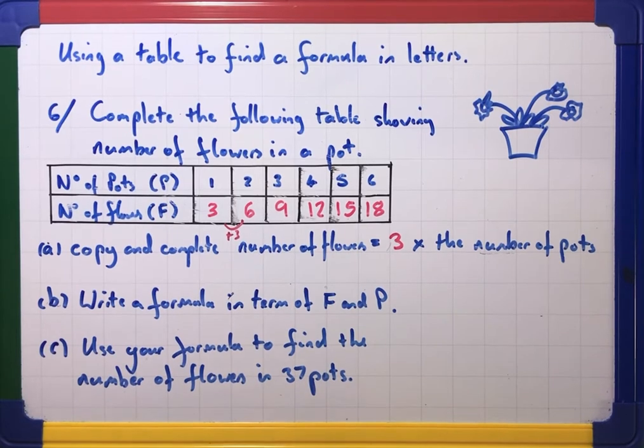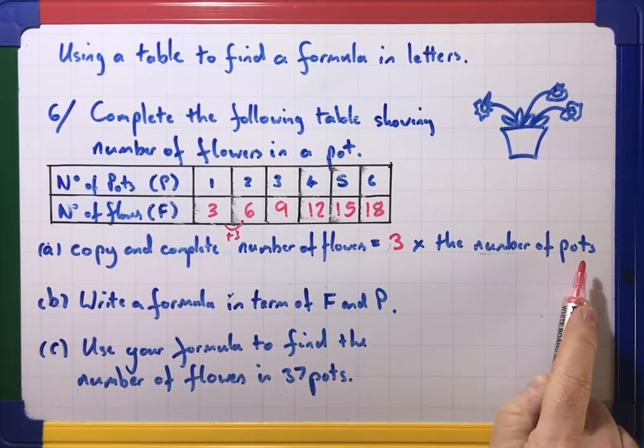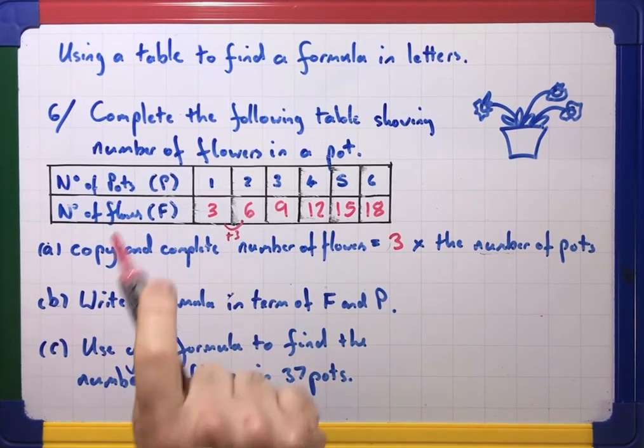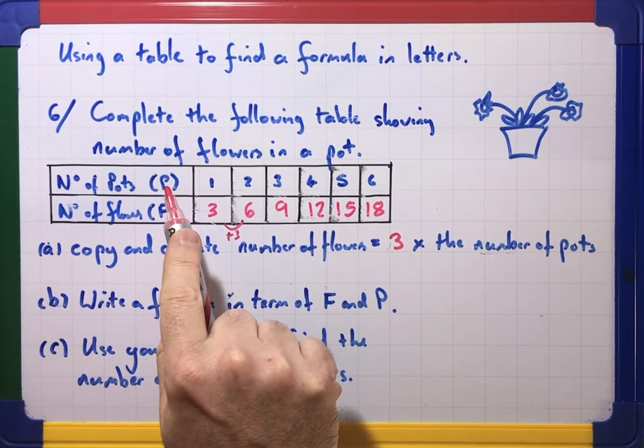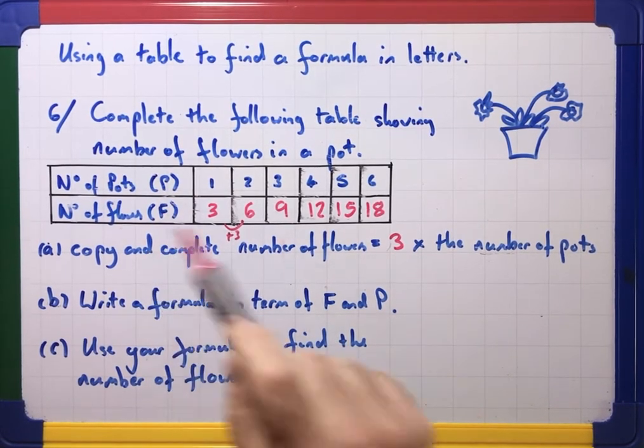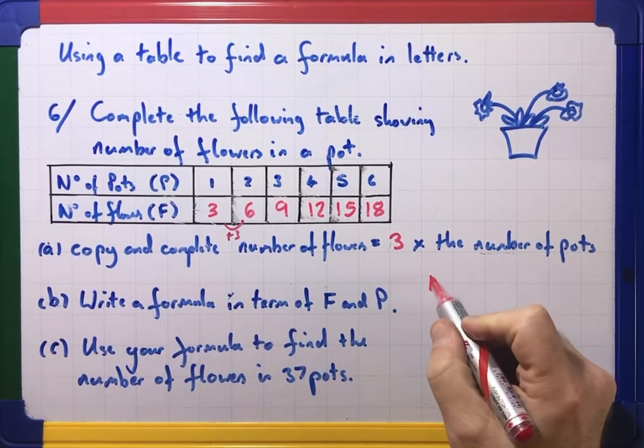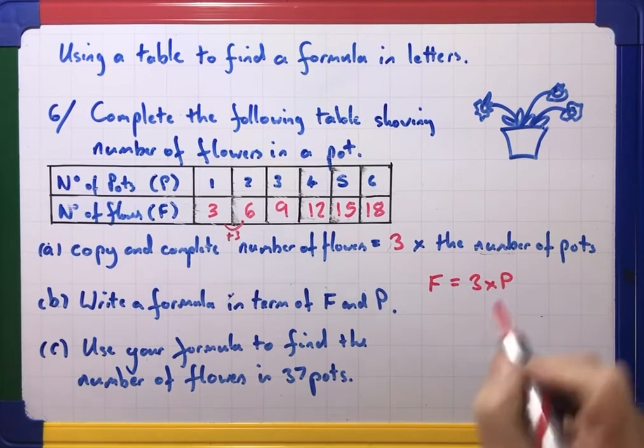However, I don't like having to write that much for a simple formula. In maths we like to abbreviate things. If I use P for pots and F for flowers, this formula would become F equals three times P, wouldn't it?